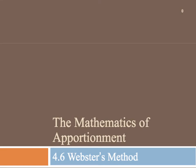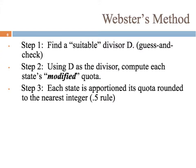This is apportionment using Webster's method. Just like Jefferson's and Adams' method, we have a lot of the same steps here.